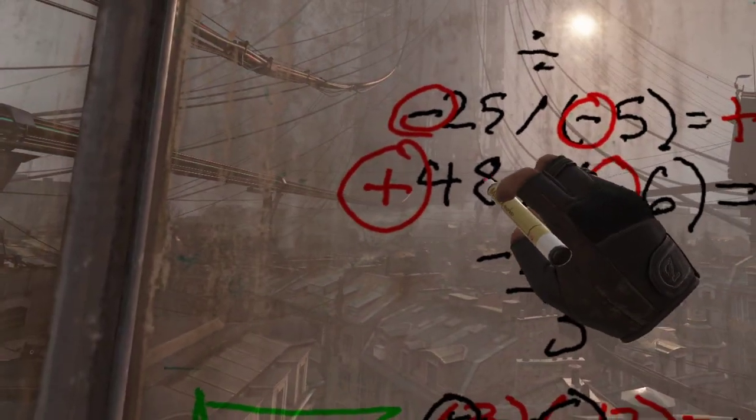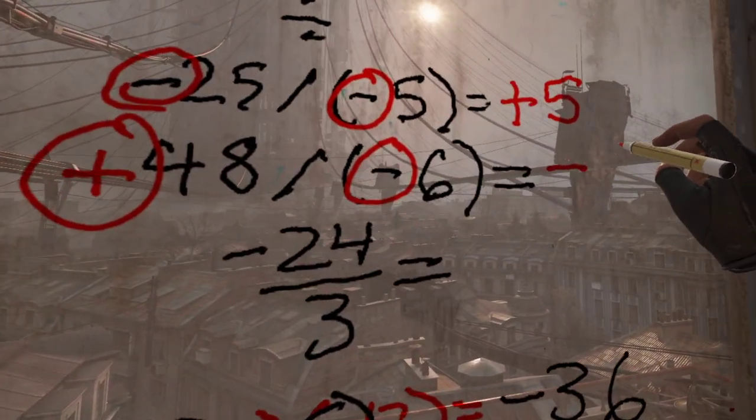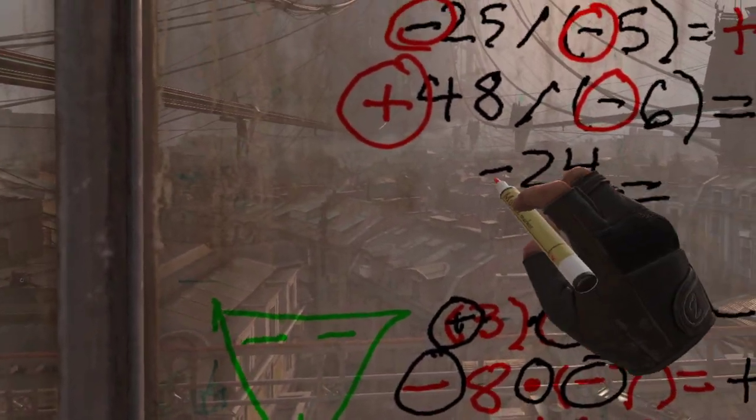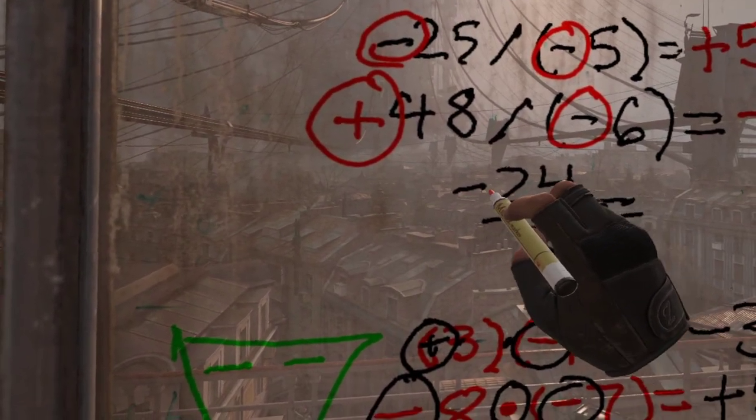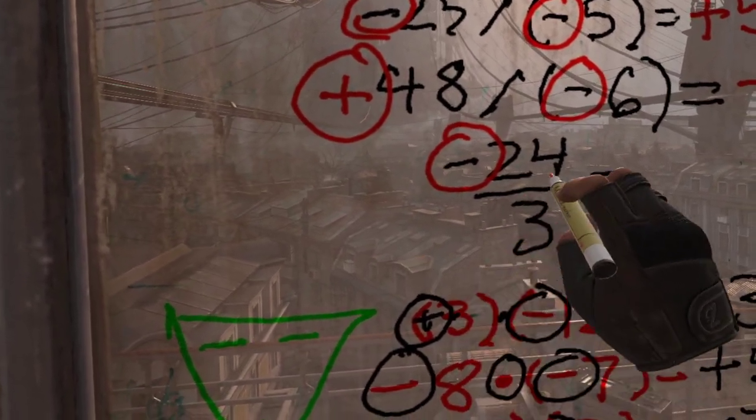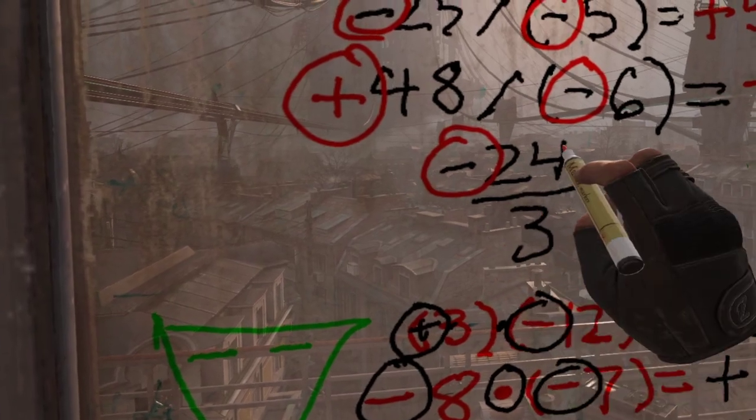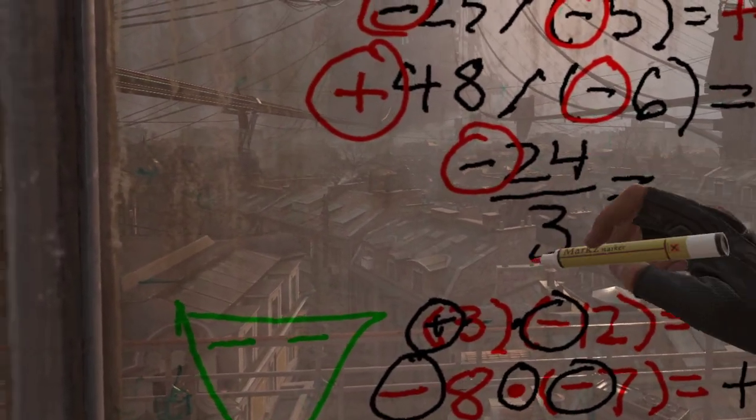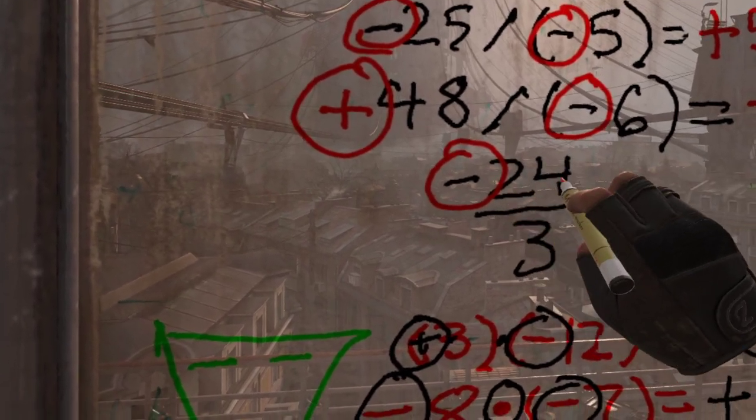And then the last one, we've got negative 24. So this is a negative divided by—so I actually wrote this as a fraction just to show that even though it's a fraction, the fraction is really just a division problem. So this is the quotient of negative 24 and positive 3. We've got a negative and positive.